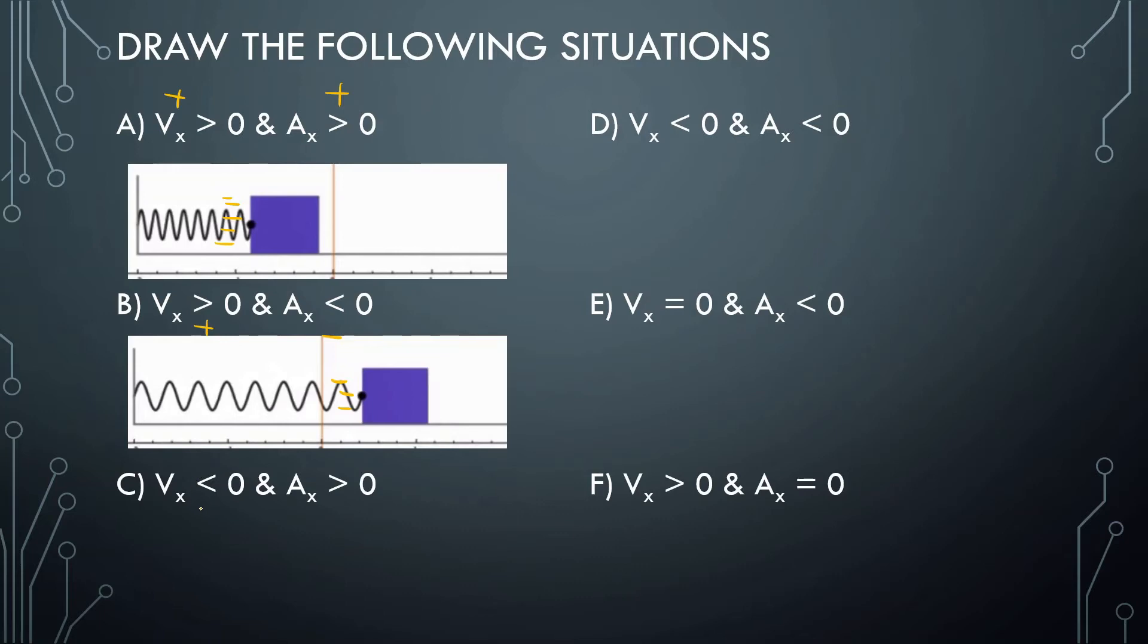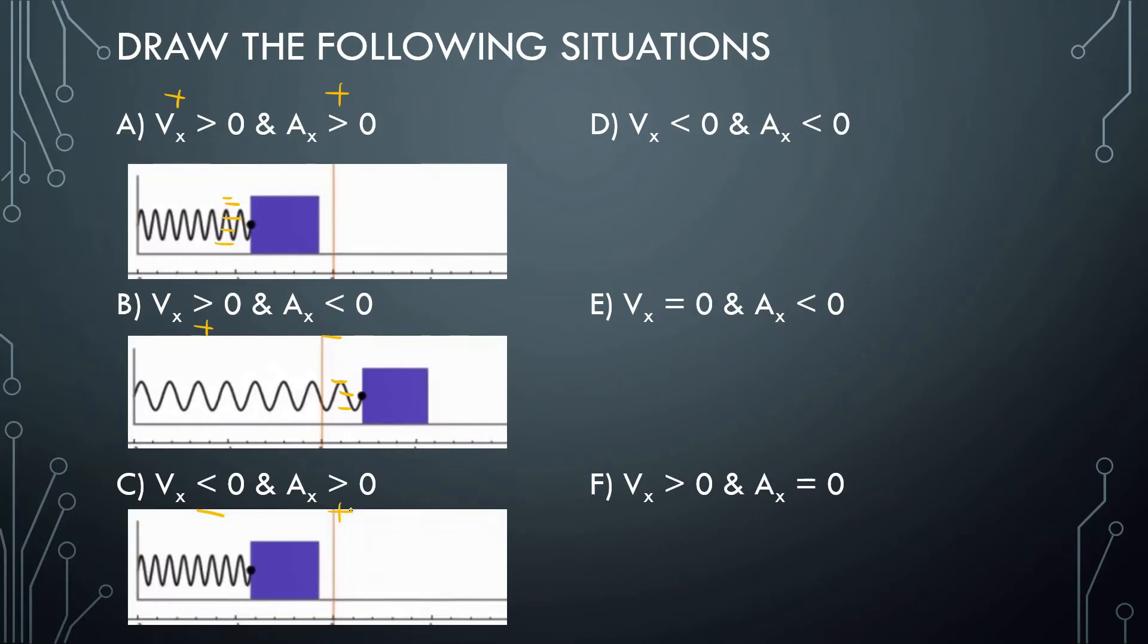Part C, velocity is negative but the acceleration is positive. How this should be looking is this block, it looks exactly the same as A, but it's moving to the left and the spring is trying to push it to the right. So it's slowing down.